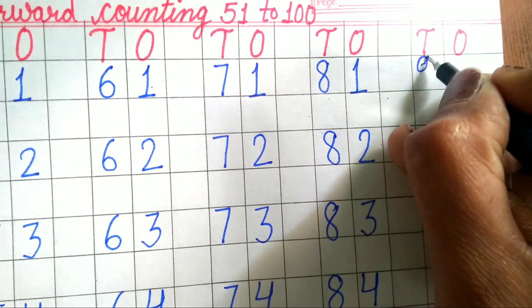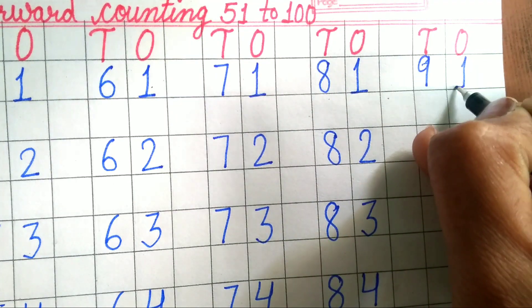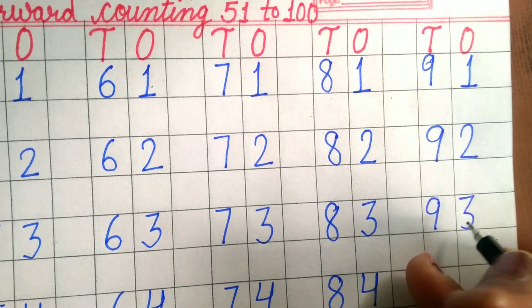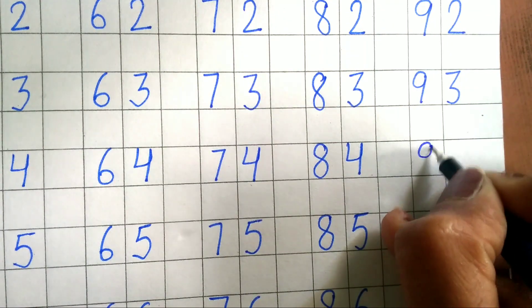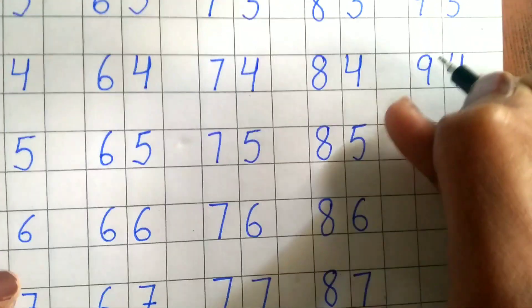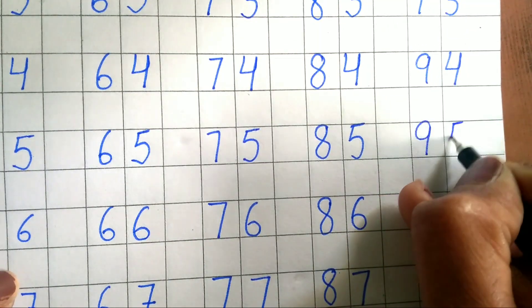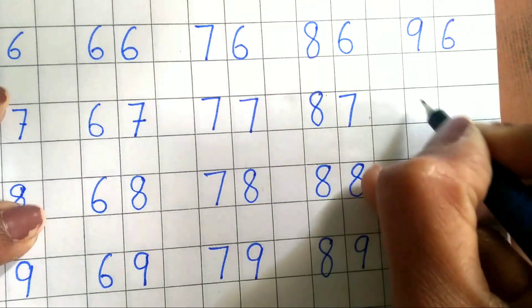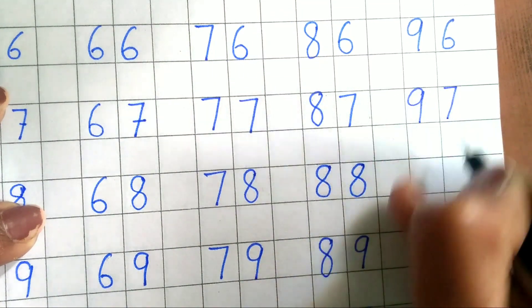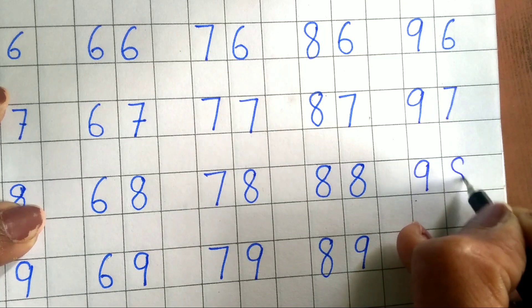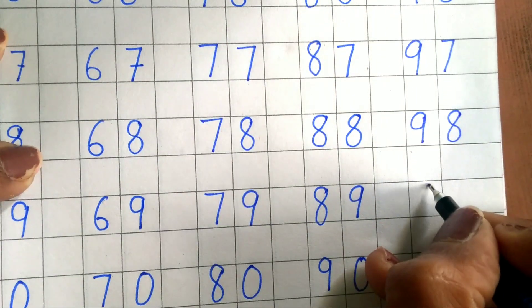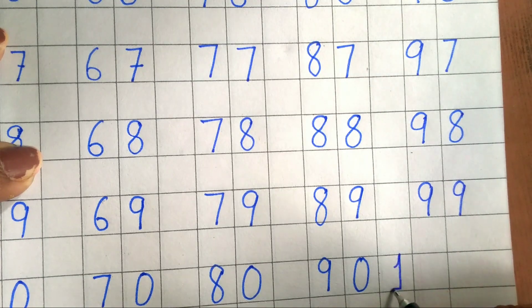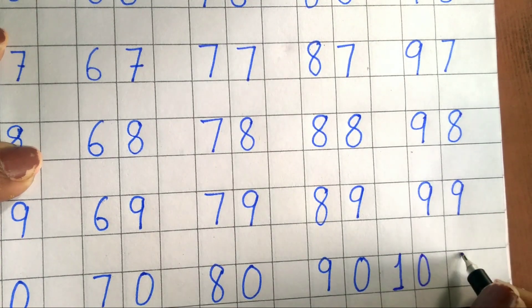91, 91, 92, 92, 93, 93, 94, 94, 95, 95, 96, 96, 97, 97, 98, 98, 99, 99, one hundred, one hundred.